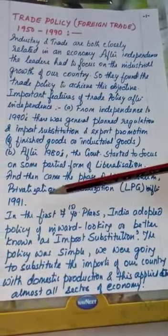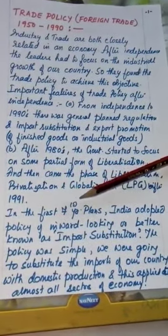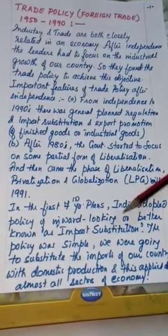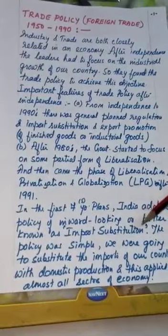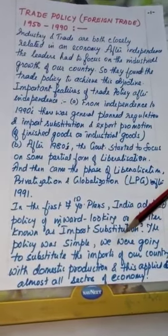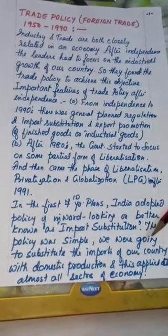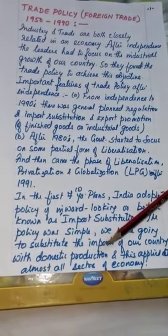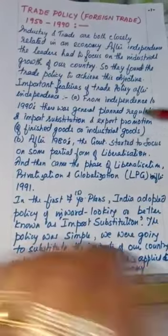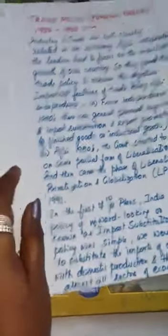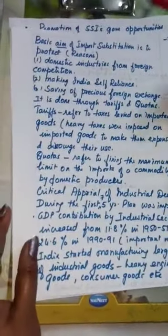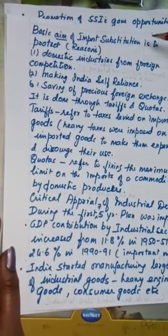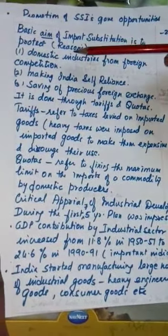This was the new economic policy. In the first seven five-year plans, India adopted a policy of inward looking, better known as import substitution. The policy was simple: we were going to substitute the imports of our country with domestic production, and this applied to almost all sectors of the Indian economy.